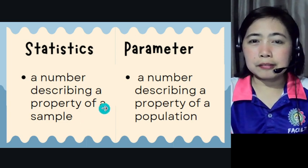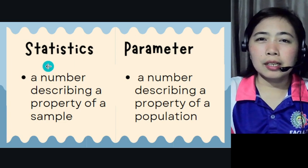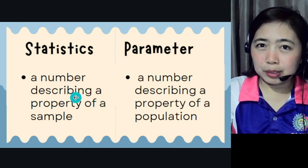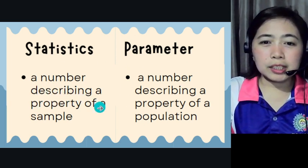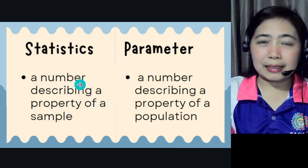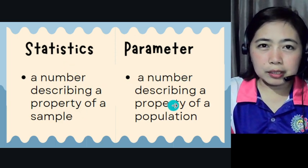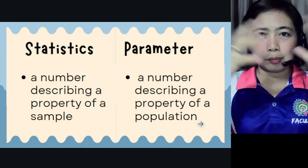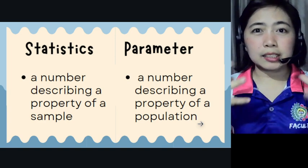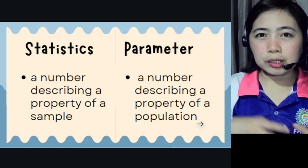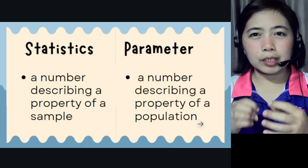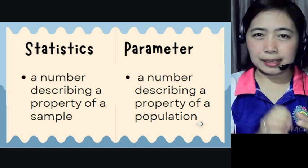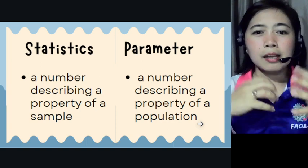Other terms to understand in our discussion are statistics and parameter. They are both numbers. Statistics is a number describing a property of a sample. Parameter is a number describing a property of a population. Parameter is used for the entire population — it has a bigger scope. Statistics is just for the sample.